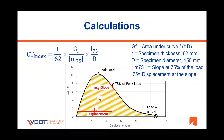CT index calculation. Once the test is performed in accordance with the standard and the curves are compliant, the CT index can be calculated using the equation shown in this slide. GF is the area under the curve normalized by specimen dimension. T is specimen thickness or height. D is specimen diameter. M75 is the absolute value of the slope at 75% of the peak load. I75 is the displacement at that slope. Note that units are given in the SI system.